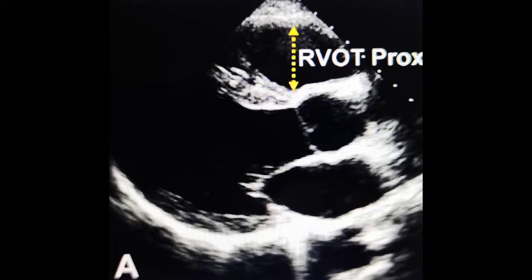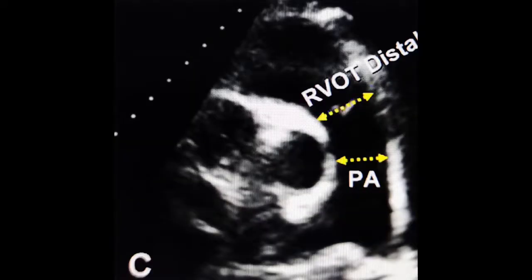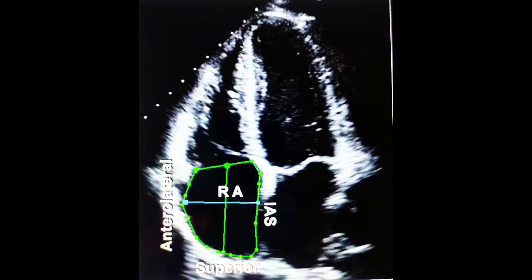The proximal RVOT diameter increases, but the most important is the distal RVOT diameter. The distal RVOT diameter is measured just below the pulmonary valve — it is the most reproducible measurement. If it is more than 27 mm, the RVOT is considered dilated. This can be seen in both the parasternal and short axis views.